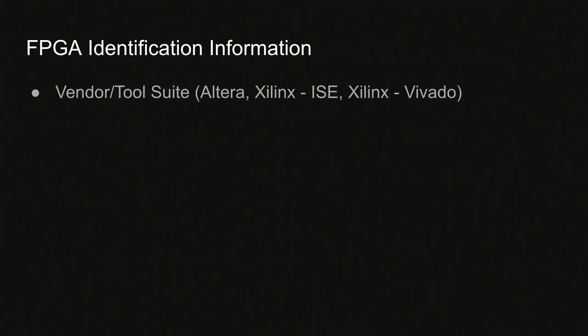The first thing you have to do after getting your photo is launch the board definition utility and put the photo of the board in — that's pretty straightforward. It's then going to ask you to identify some information about the FPGA. The first thing it asks for is the vendor tool suite, because in the dialogues you'll see Altera, Xilinx, and Vivado. Xilinx is a manufacturer and Vivado is a toolset of which only certain Xilinx products support.